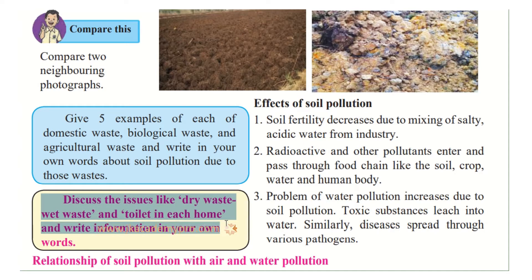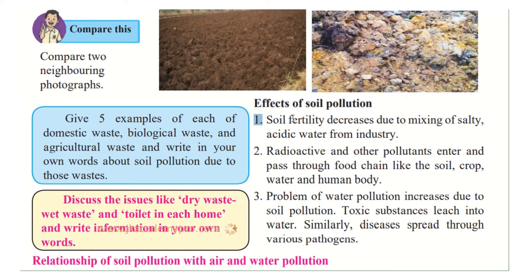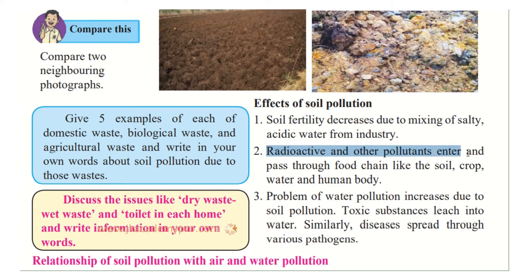Discuss issues like dry waste, wet waste, and toilets in each home and write your information in your own words. Now, what are the effects of soil pollution? First, soil fertility decreases due to mixing of salty, acidic water from industries. If chemical waste water goes into the soil, the soil becomes salty. As seen in the second picture, when there is more salt content the crops can't grow well.